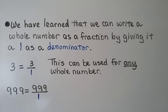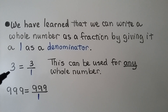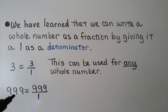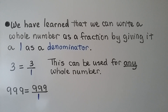We have learned that we can write a whole number as a fraction by giving it a 1 as a denominator. This can be used for any whole number. To write 3 as a fraction, we just write it with a 1 for a denominator. We can even do it for 999 — we just give it a 1 for a denominator.